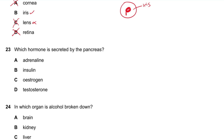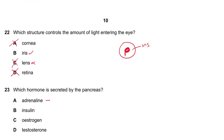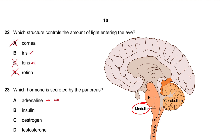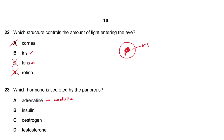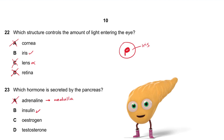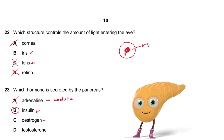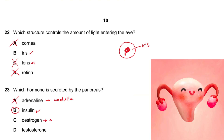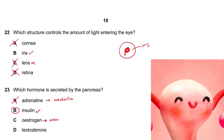Question 23: Which hormone is secreted by the pancreas? Adrenaline is secreted by the adrenal medulla — no. Insulin is secreted by the pancreas — yes. Estrogen is by the ovaries. Testosterone is by the testes. Answer is B.